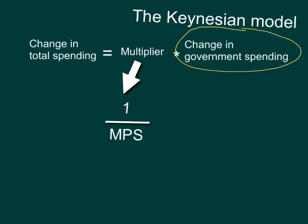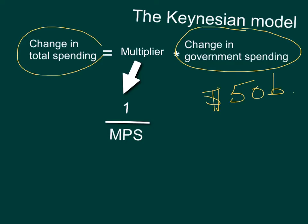Now what he also said in terms of the math part was that if you increase government spending, let's say by $50 billion, there would be a multiplier effect so that the change in total spending on the whole economy — you can think of that as GDP, gross domestic product, or total national income — wouldn't just increase by $50 billion, but it would increase by something more, three, four, five times as much. The multiplier is dependent on how much people on average are saving.